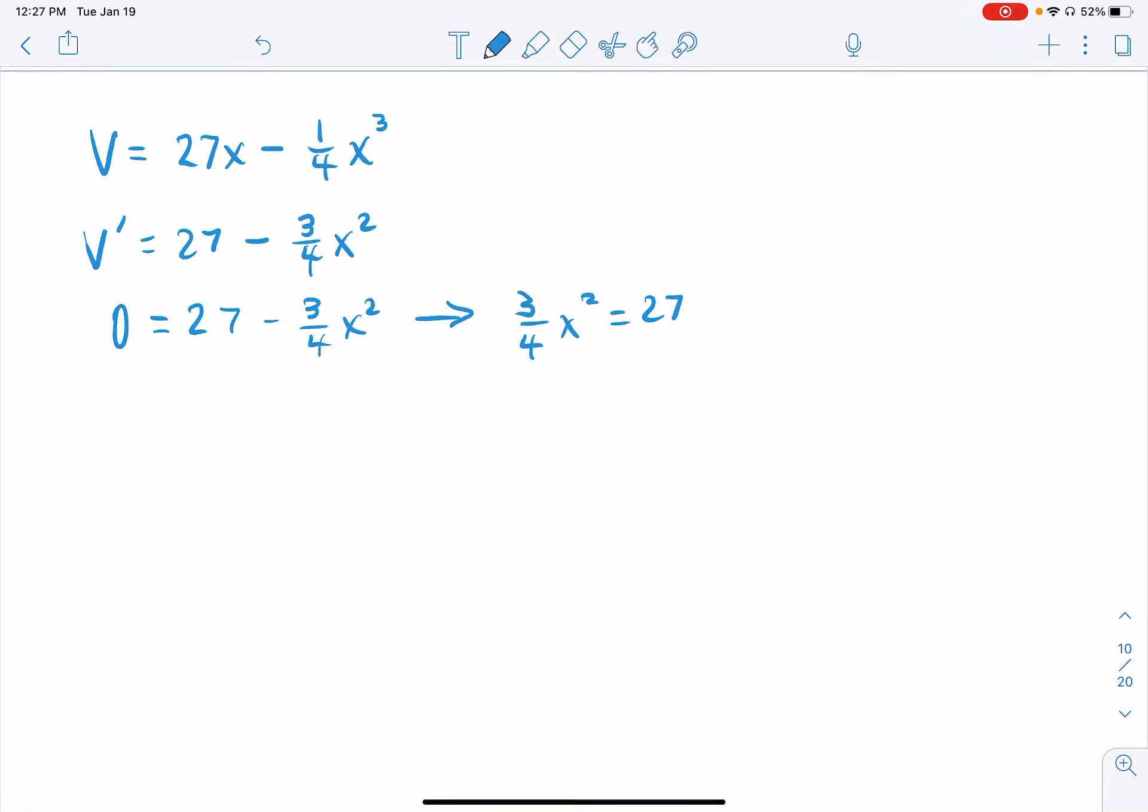3 fourths x squared is equal to 27. You could multiply by 4 and divide by 3, but I'm going to divide by 3 and multiply by 4. So if I divide by 3, I get 9. And 9 times 4 is 36. Totally convenient. x is equal to plus or minus 6.